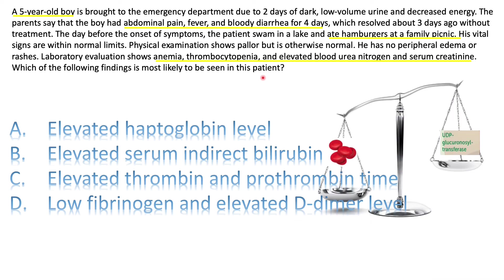Hemolytic means there is anemia; uremic means there is uremia, as seen with elevated BUN and acute kidney injury. Which of the following is most likely to be seen in this patient? Because of the hemolysis taking place, it's overwhelming the conjugating capacity of the liver — so there is more indirect bilirubin than the liver can conjugate. Therefore the correct answer is elevated indirect bilirubin.